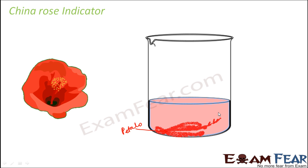Then we add some warm water. After adding some warm water, we leave it for some time without disturbing it at all. After some time, what do we observe? The color of the solution gradually turns reddish. So initially the water was colorless, but when you leave it for some time without disturbing, you see that the water gradually changes its color to red.